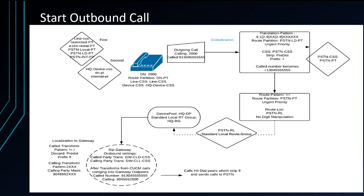Today we're going to continue on with just an outbound call. Our translation pattern has a calling search space assigned to the PSTN calling search space. Within our example, we have a PSTN partition within that. We still have a route pattern to deal with route lists and route groups like the old way. However, now we have very, very few route patterns. In a basic Call Manager — where you don't have a lot of sites, no international sites — you'll probably just have one route pattern, and it consists of this \+!